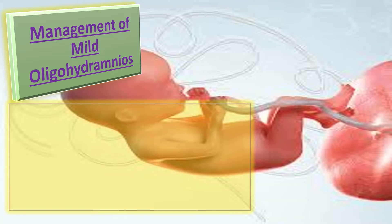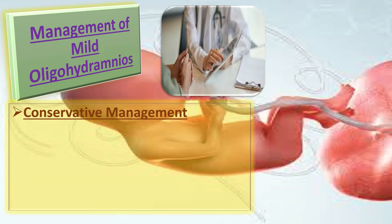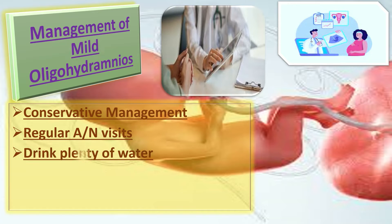If the patient is diagnosed with mild oligohydramnios — AFI between 5 to 8 centimeters — we will go for conservative management. We will call the patient for regular antenatal visits on a weekly basis. In each visit, we inquire about fetal movements, do proper examination to check liquor volume and fetal size, obstetrical ultrasound, and biophysical profile on a weekly basis.